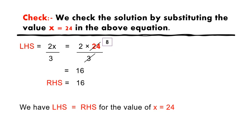Now we have to check the solution. We check the solution by substituting the value x is equal to 24 in the above equation. LHS is equal to 2x by 3. Now we have to put the value of x is equal to 24. So 2 into 24 upon 3. 3 ones are 3, 3 eights are 24.